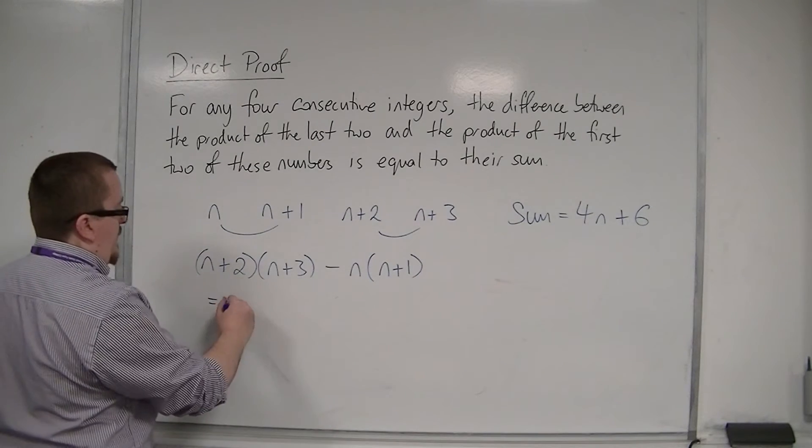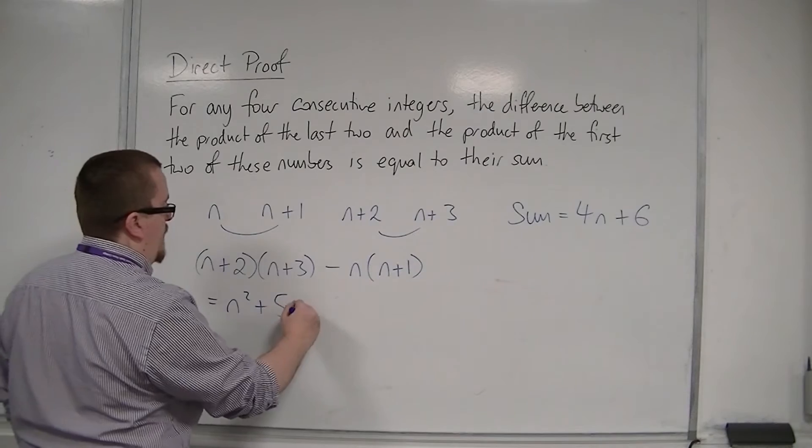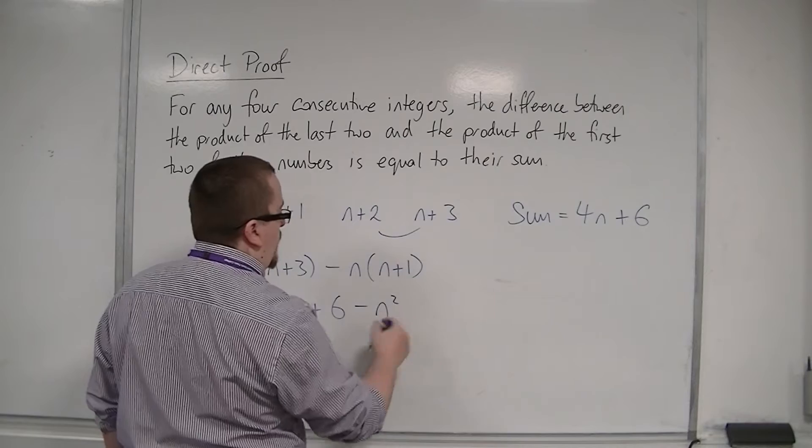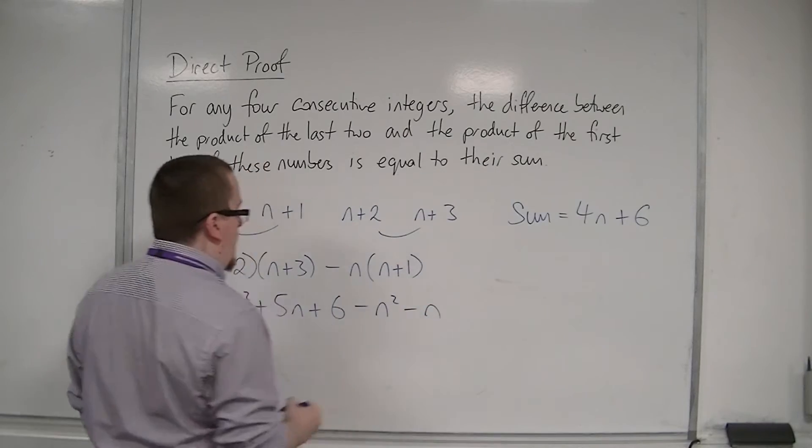So we have n squared plus 5n plus 6, expanding those brackets, and expanding those brackets we've got minus n squared minus n.